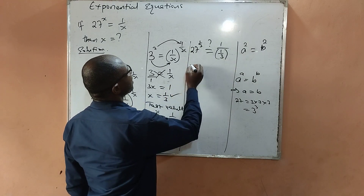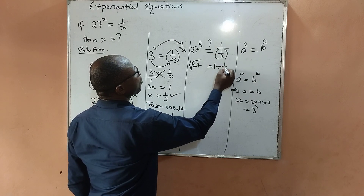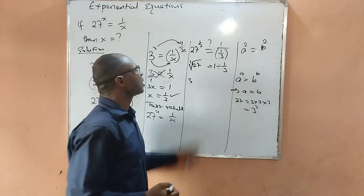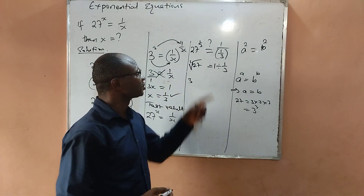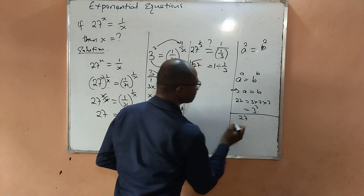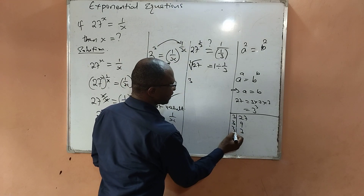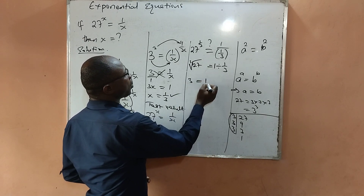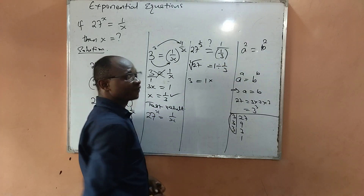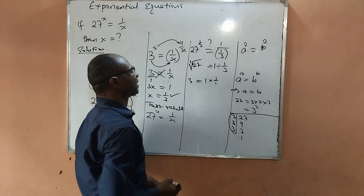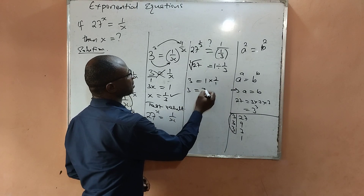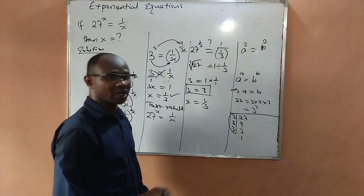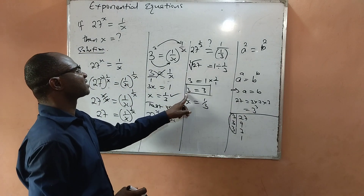27 raised to power 1 over 3 is the same as the cube root of 27, equal to 1 divided by 1 over 3. The cube root of 27 is 3, because 3 multiplied by 3 multiplied by 3 equals 27. On the right-hand side, 1 divided by 1 over 3 becomes 1 times 3 over 1, which equals 3. Therefore the left-hand side equals the right-hand side, confirming that x equals 1 over 3.